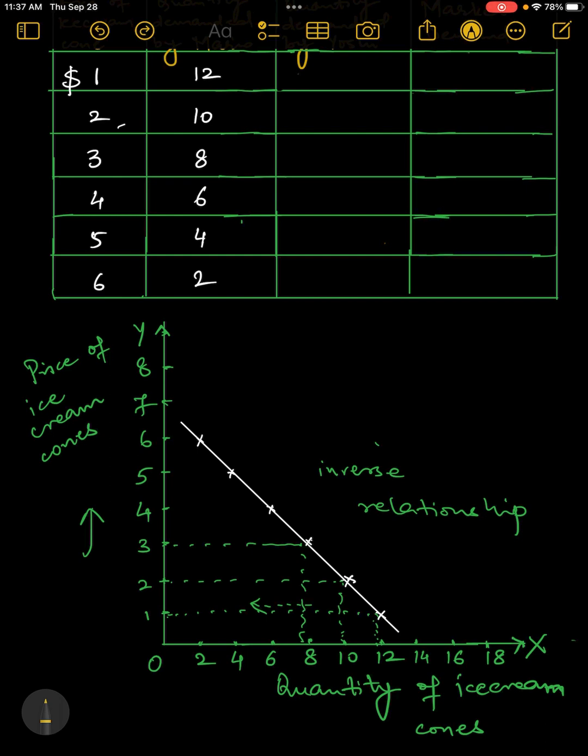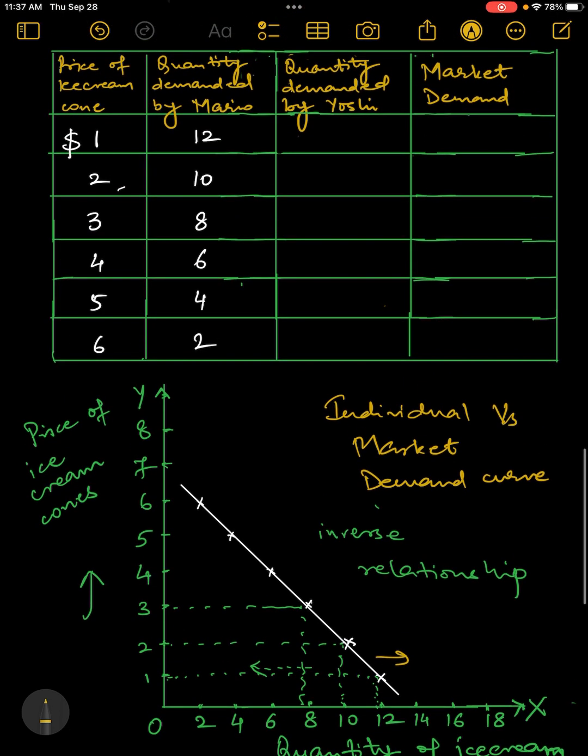Now, another thing we need to understand is the difference between individual demand curve and market demand curve. The demand curve what we are looking here at is individual demand curve. This curve is showing me individual's demand, demand of Mario. But in case I want to find the market demand of ice creams at various possible prices, I need to add all the demands, quantity demanded of ice cream by different individuals, then I'll get the market demand.